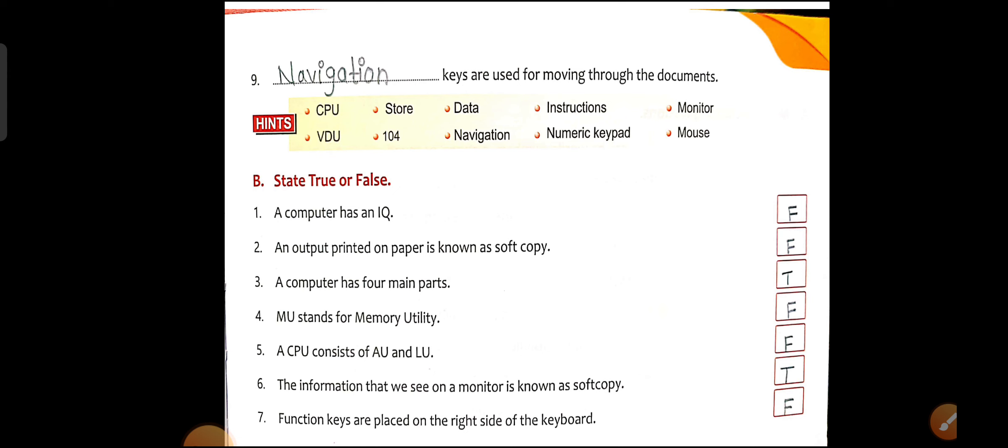Point number 2: An output printed on paper is known as a soft copy. This statement is False. When data or a document is printed on paper, it is called a hard copy, not a soft copy. So this statement is wrong.